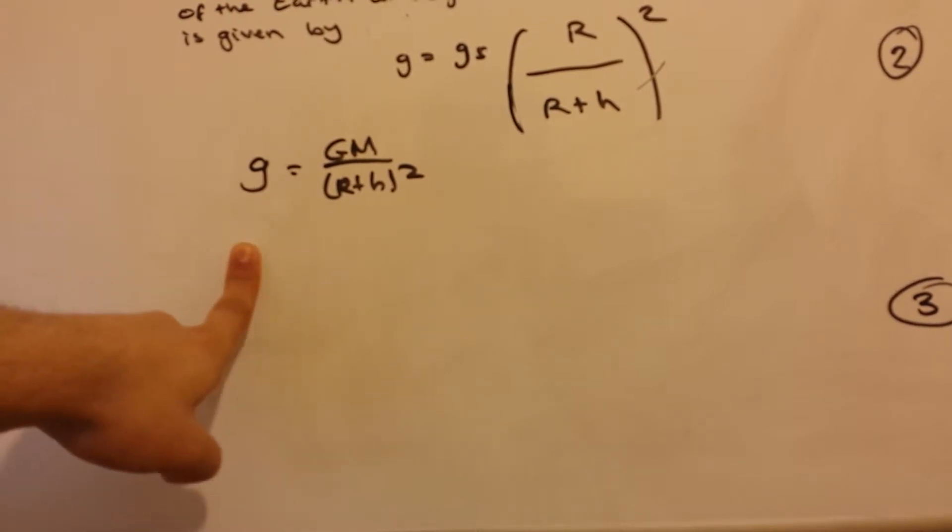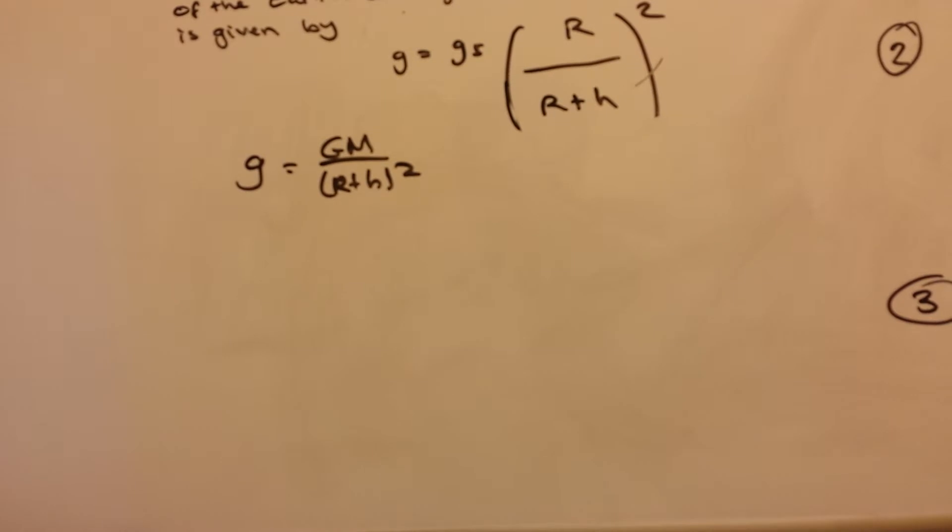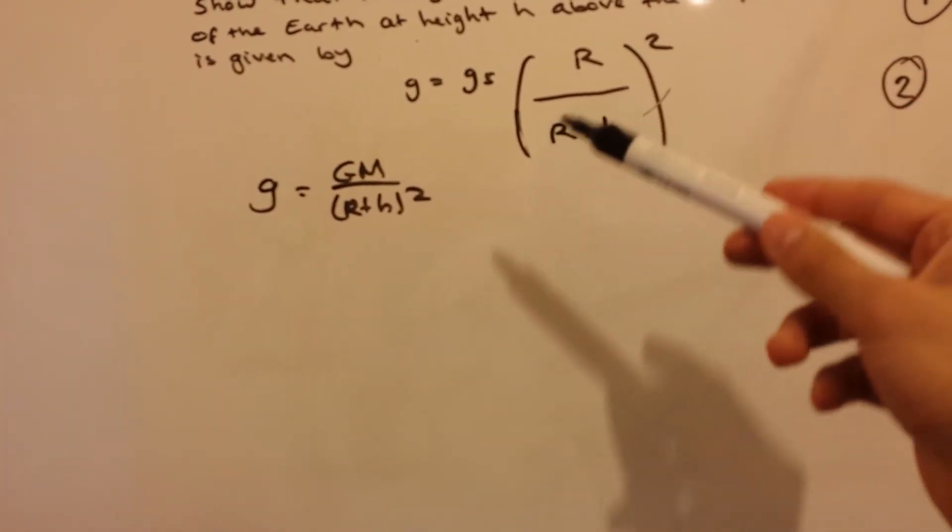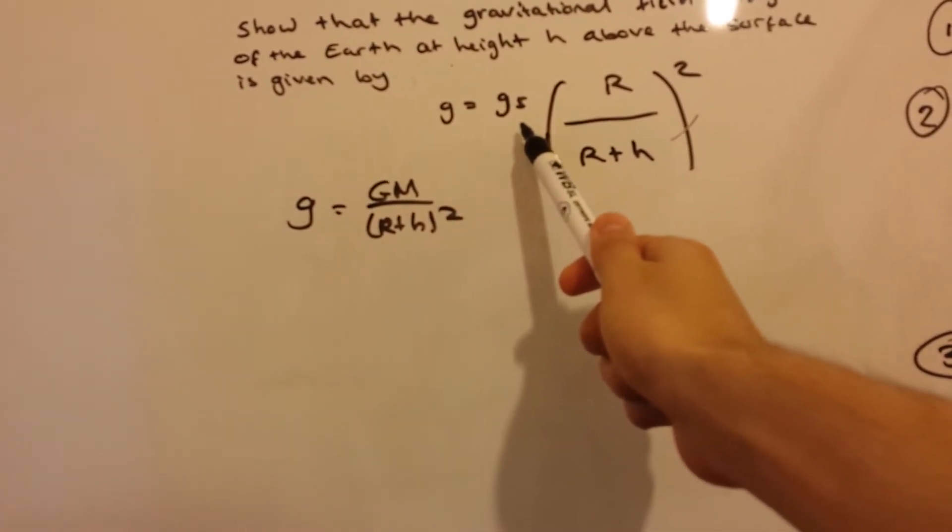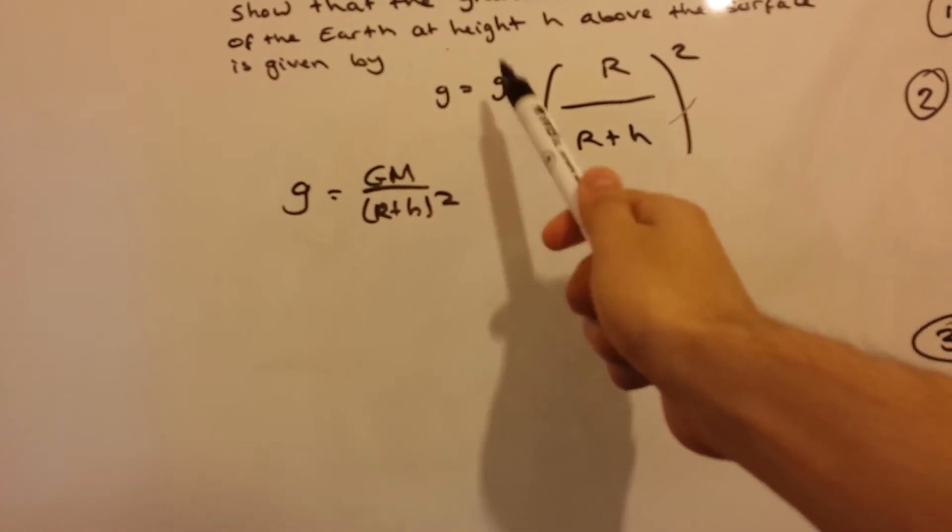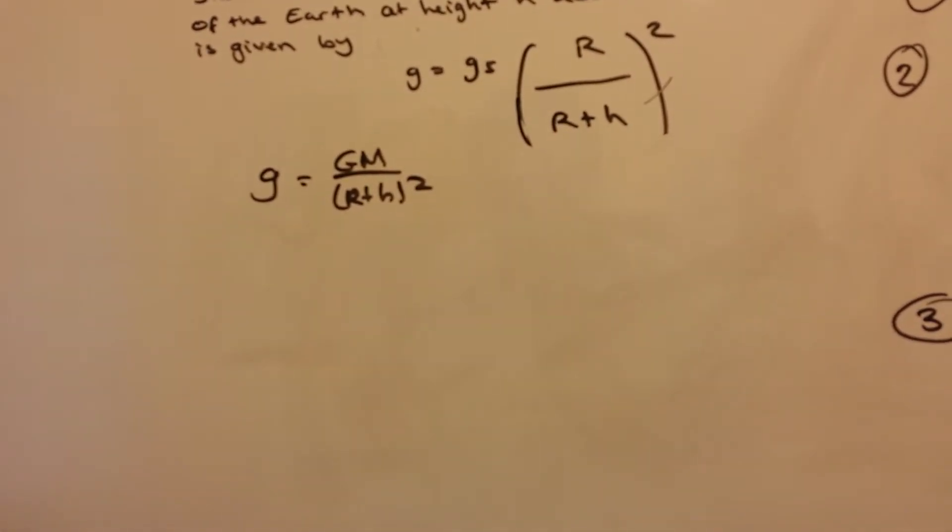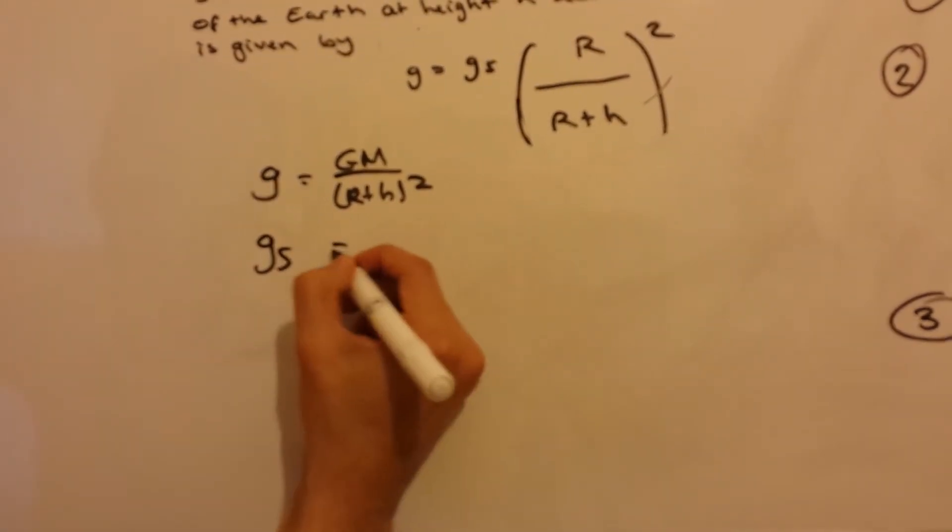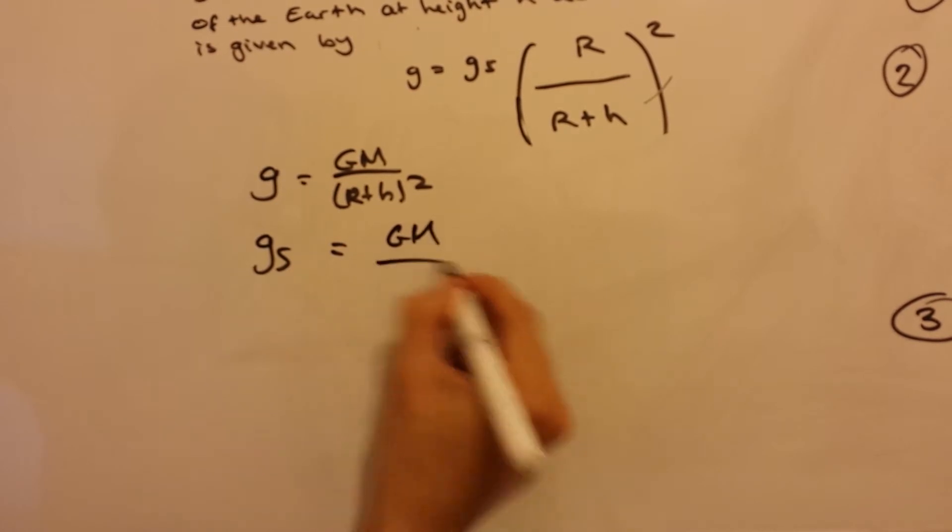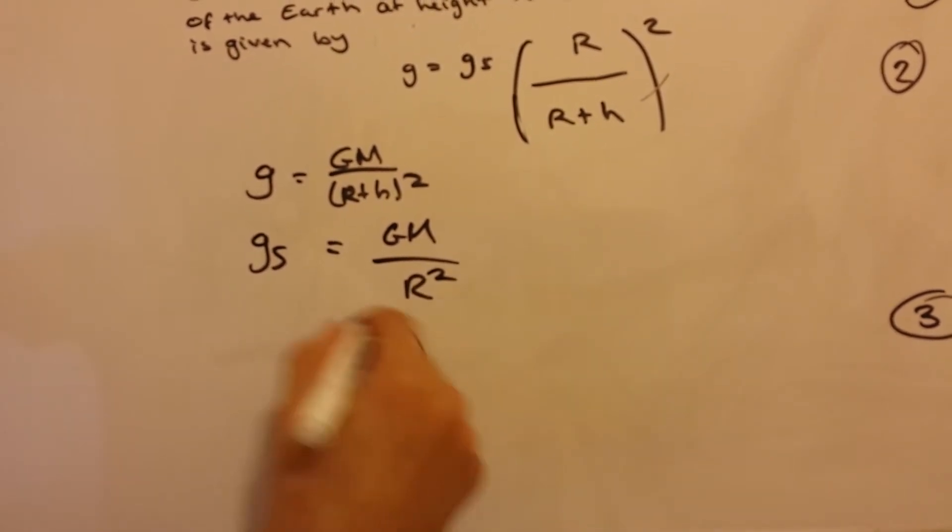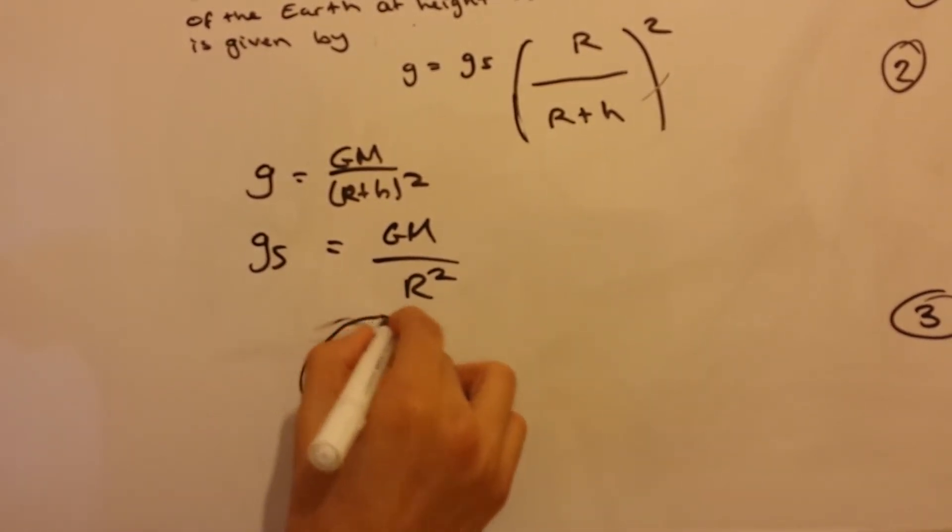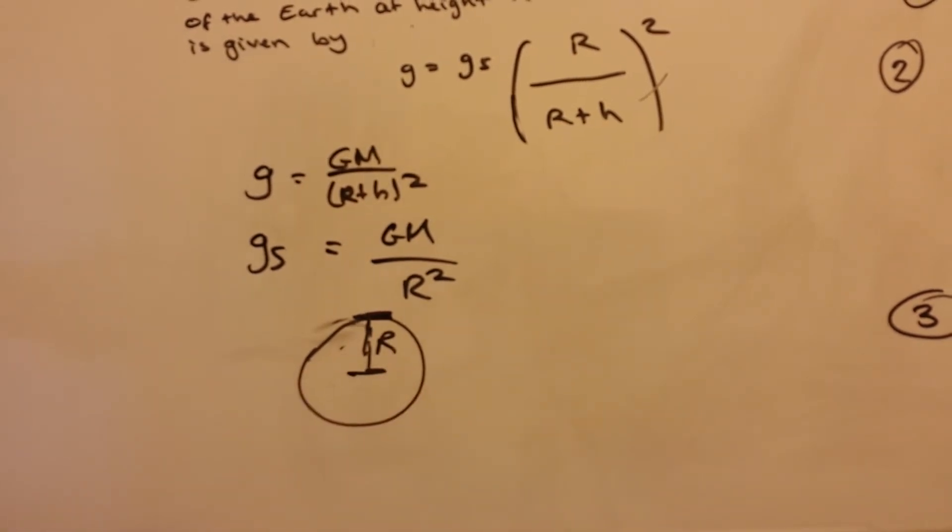Let's now find the gravitational field strength at the surface. In this expression, we can see that they have the gravitational field strength at the surface. So, let's find that. What is the gravitational field strength at the surface? Well, it's GM over radius squared. That's the Earth. So, the gravitational field strength at the surface is here, and the distance is the radius.